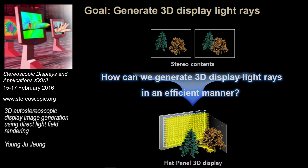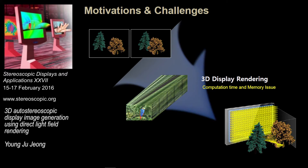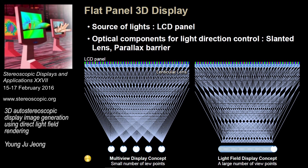The challenges are that conventional display rendering algorithms have big issues with computational time and memory usage to generate display images. Before discussing the algorithm, I want to introduce the concept of the autostereoscopic display. The source of light is the LCD panel, and each pixel becomes a light array. The direction of the light array is controlled by optical components such as a lenticular lens or parallax barrier.